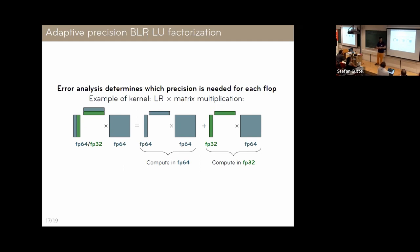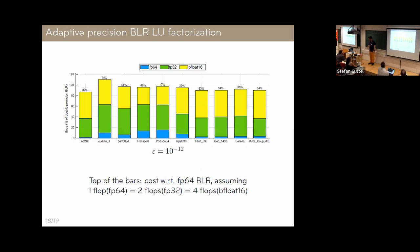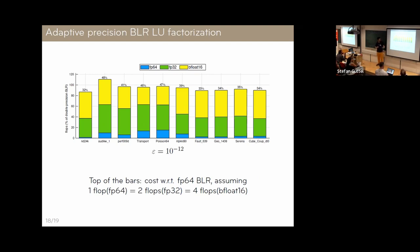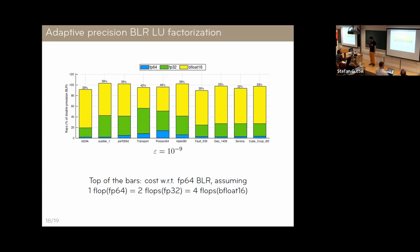Here are results on a range of matrices amenable to block low-rank compression. I'm showing the proportion of flops in the LU factorization performed in each precision: yellow is BFloat16, green is single, blue is double. With a target of 10^{-12} — well above single or BFloat16 precision — we can still perform a decent proportion of operations in lower precision, and the cost percentage is estimated assuming cost proportional to bit width. Decreasing the target to 10^{-6}, as expected, even more operations shift to lower precision, with higher gains.